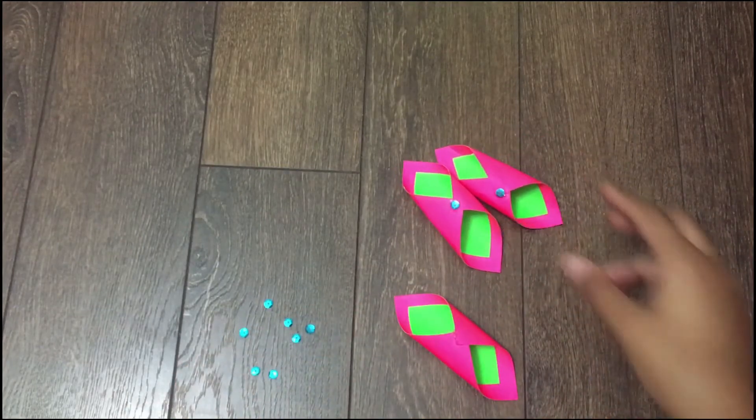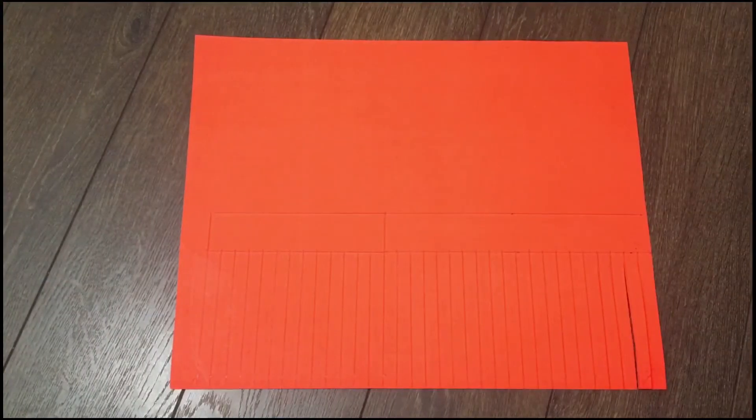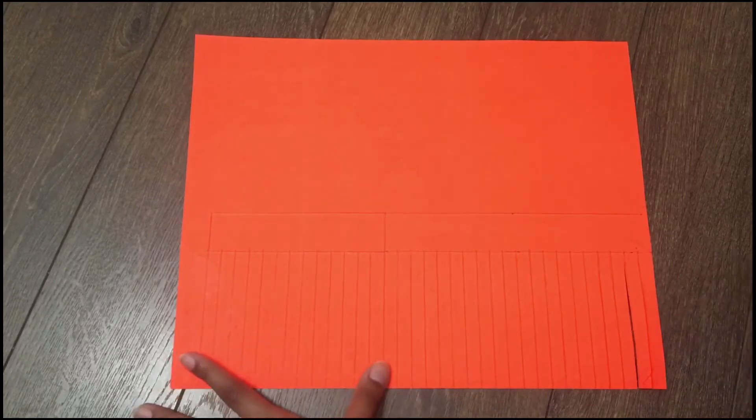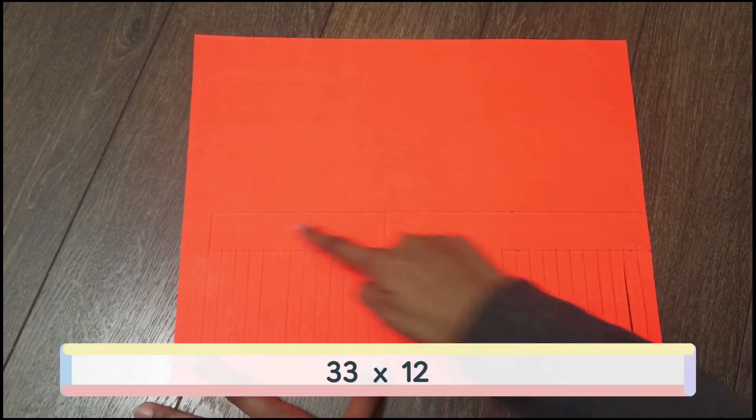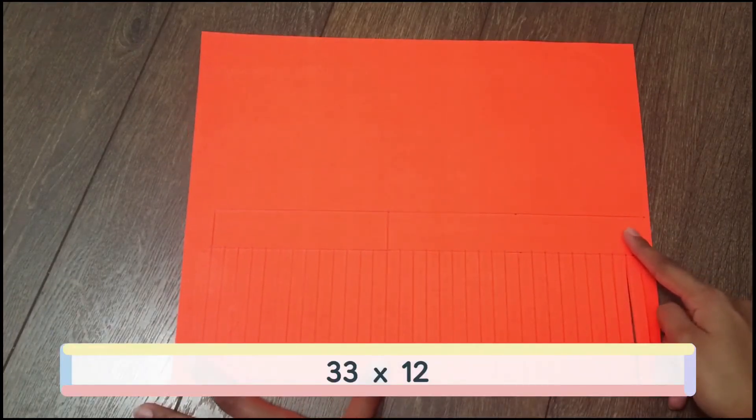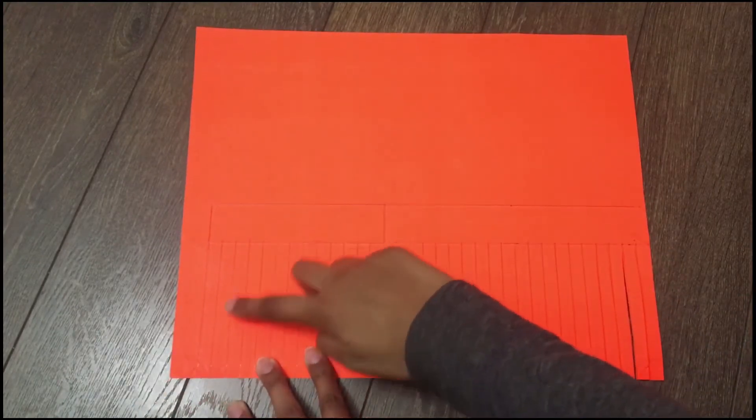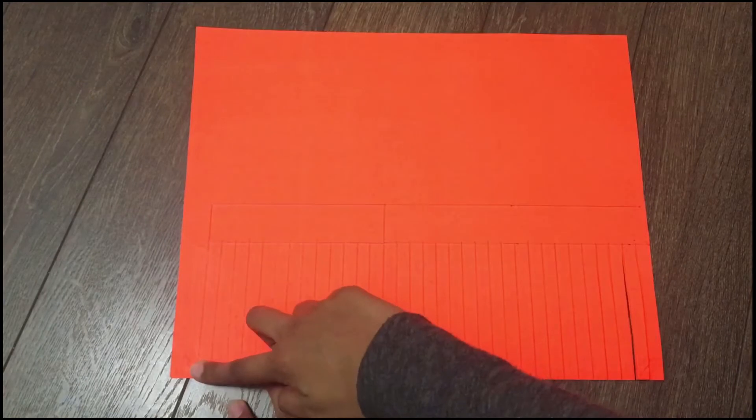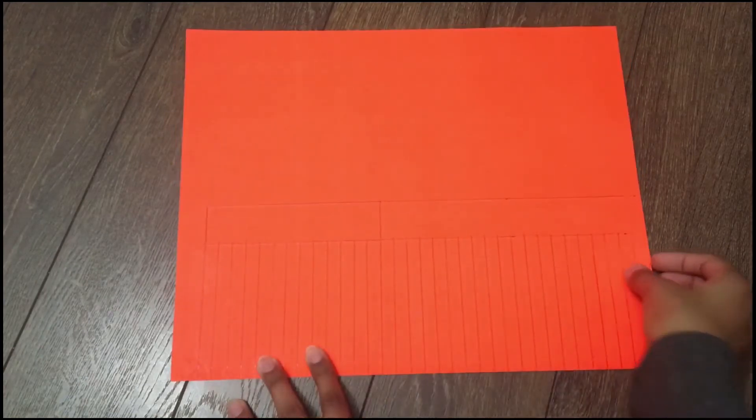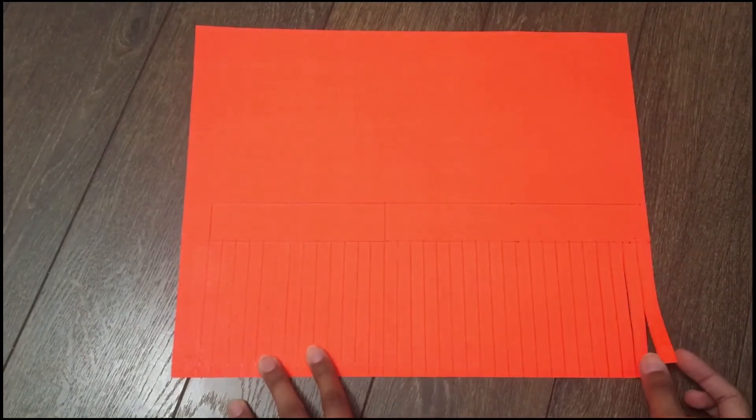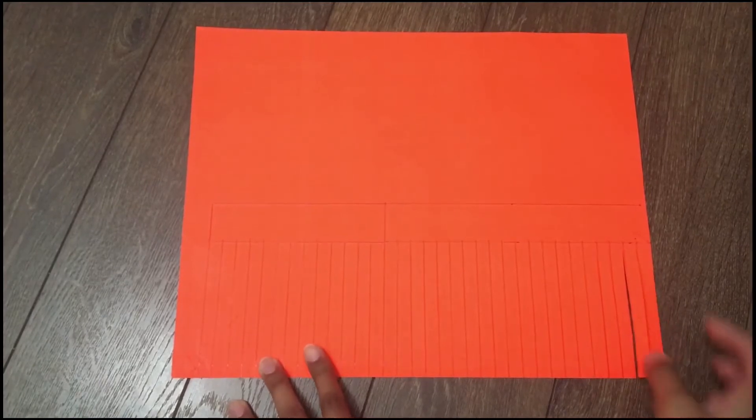Next take another piece of paper and the dimensions for this is 33 centimeters by 12 centimeters from top to bottom. Leave a two centimeter gap and after the gap start making one centimeter width strips, make as many as you can, and start cutting them out.